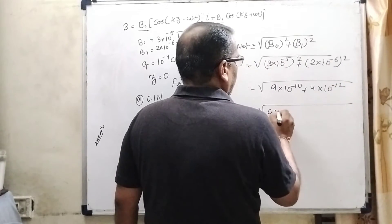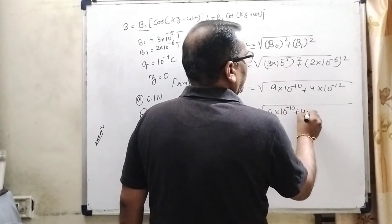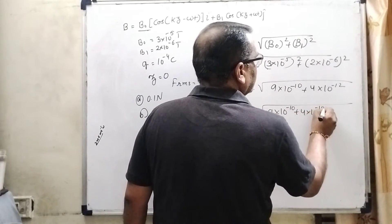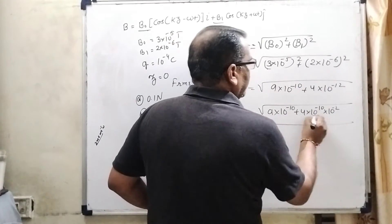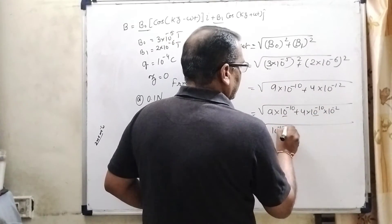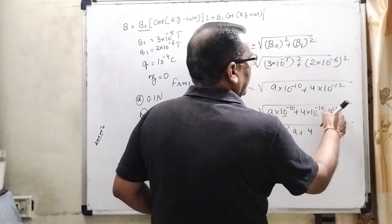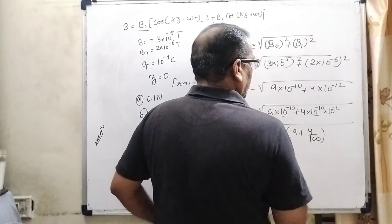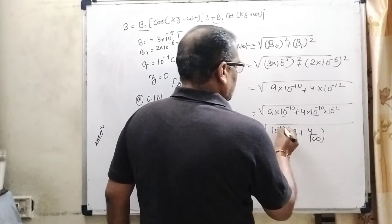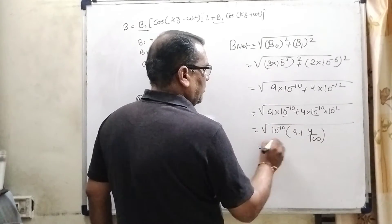Now it can be written as 9 into 10 raised to power minus 10 plus 4 into 10 raised to power minus 10 into 10 raised to power minus 2. You can see that 10 raised to power minus 10 get common. Now, it is 9 and 4 into 10 raised to power minus 2. 10 raised to power minus 2 means 1 upon 100. So, 10 raised to power minus 10 taken out from the root, now it becomes 10 raised to power minus 5.